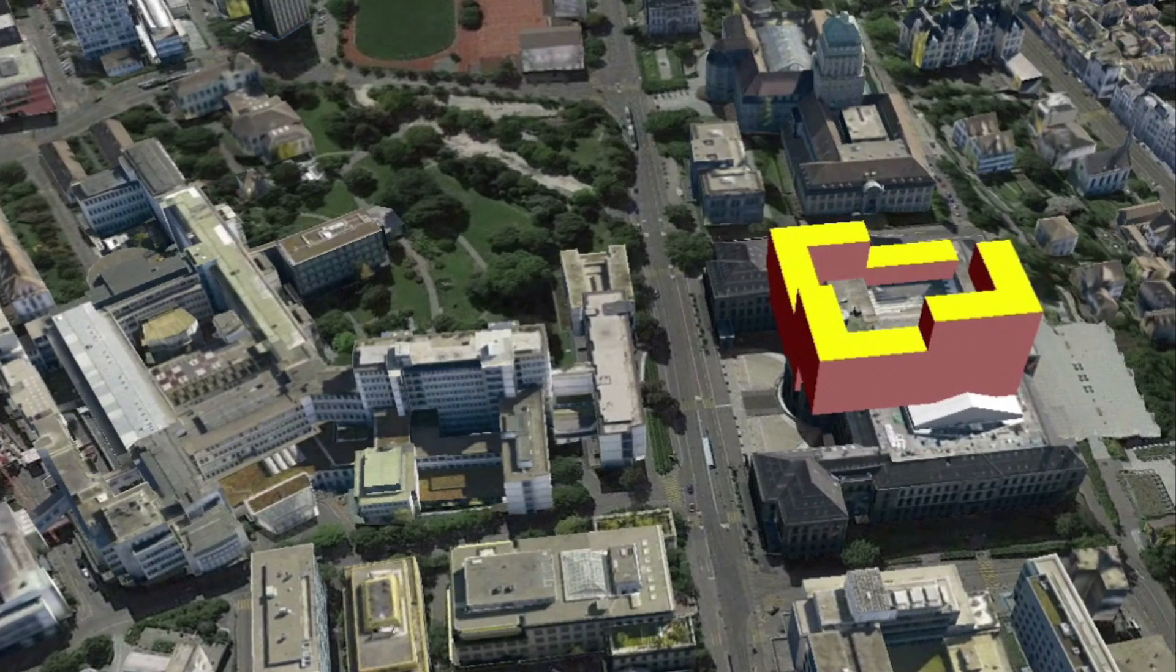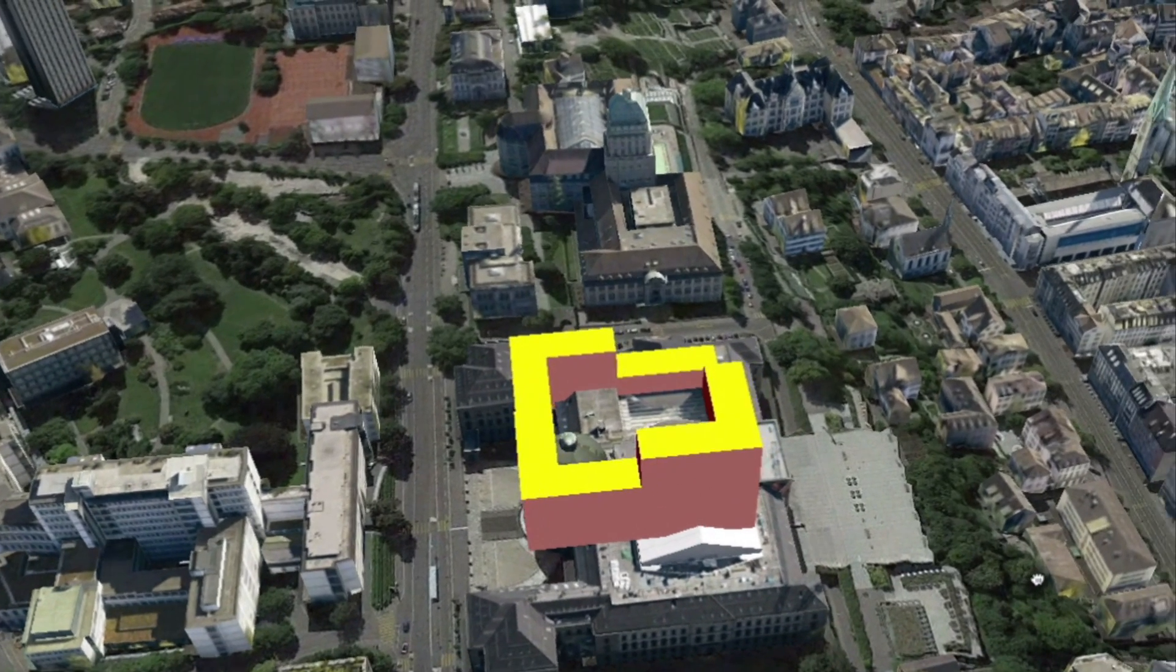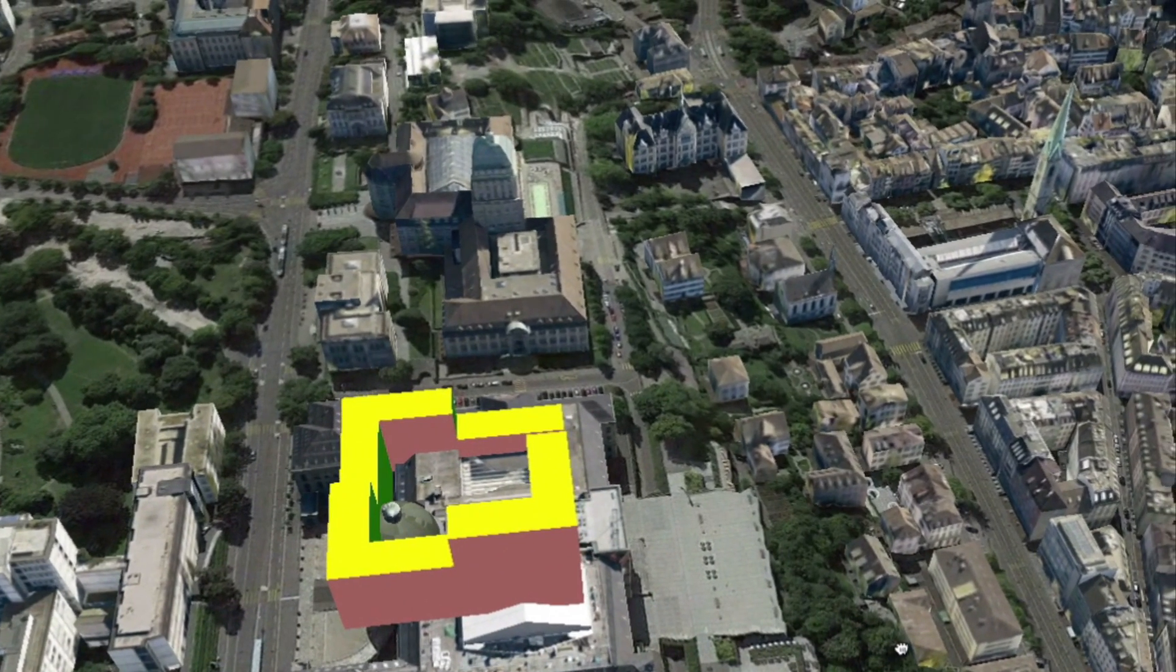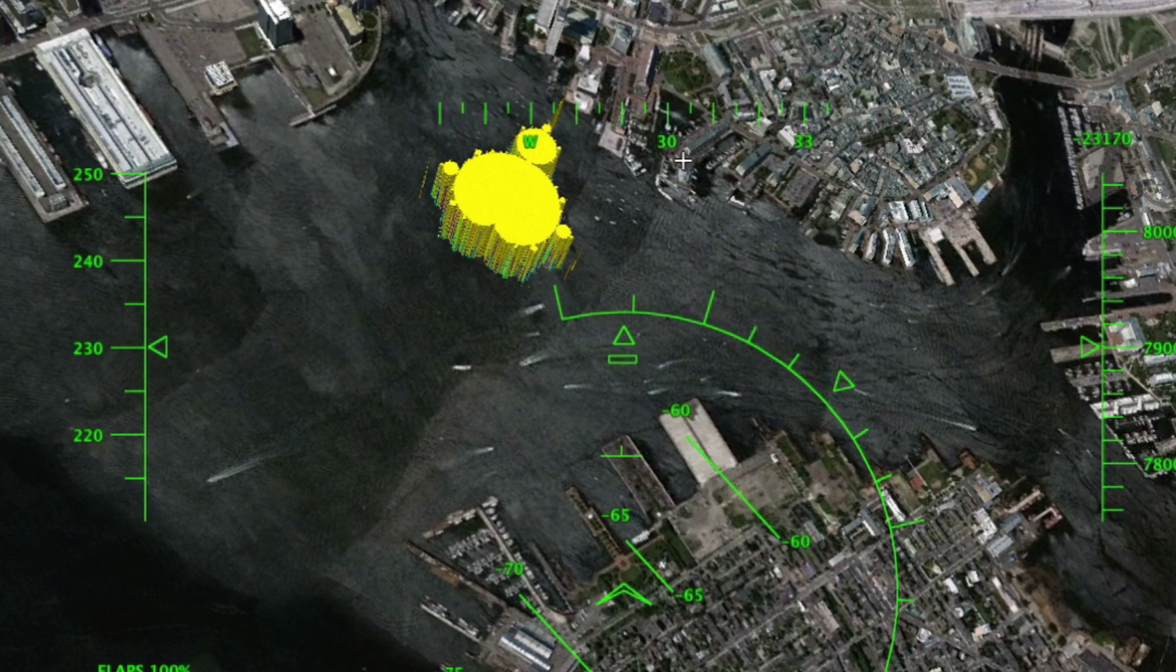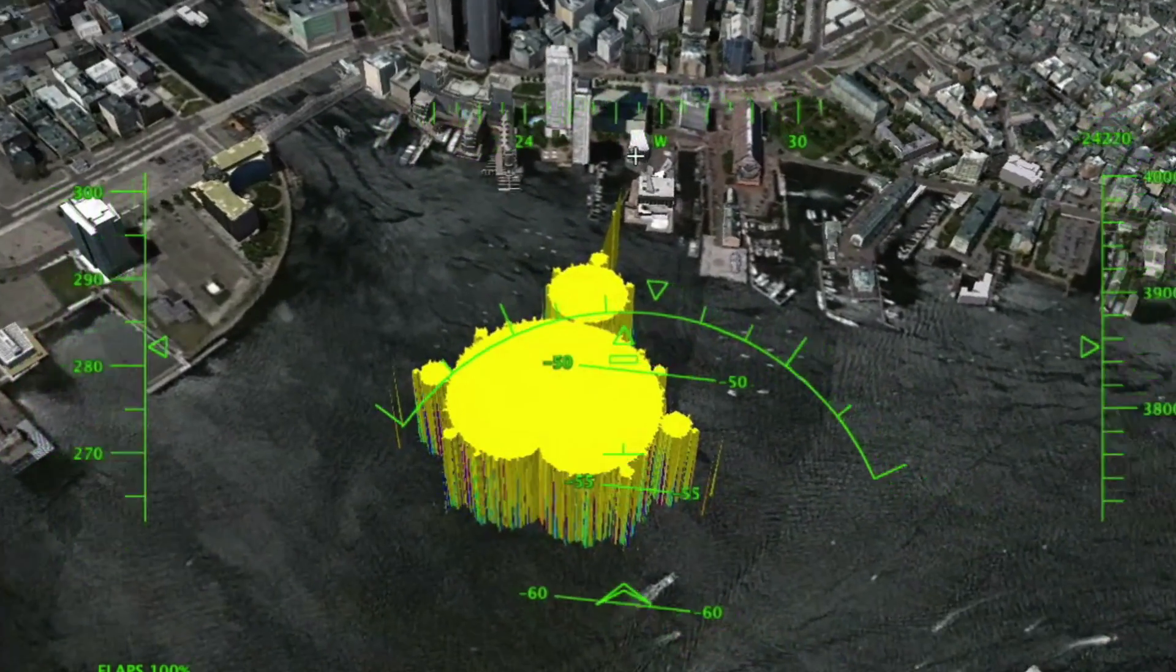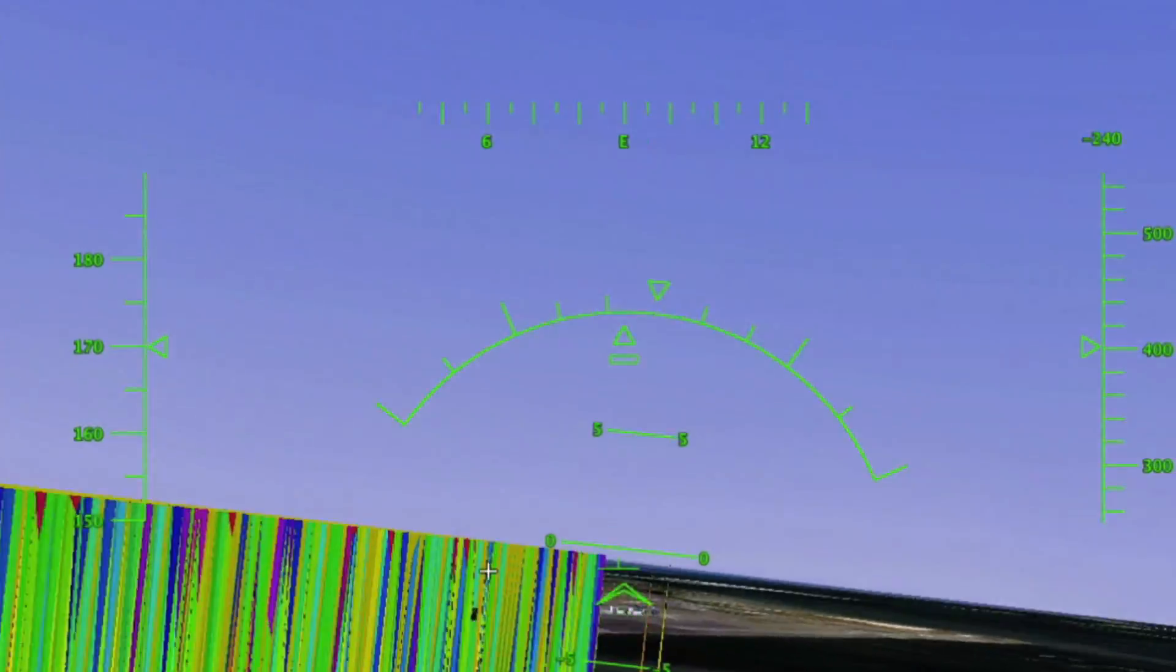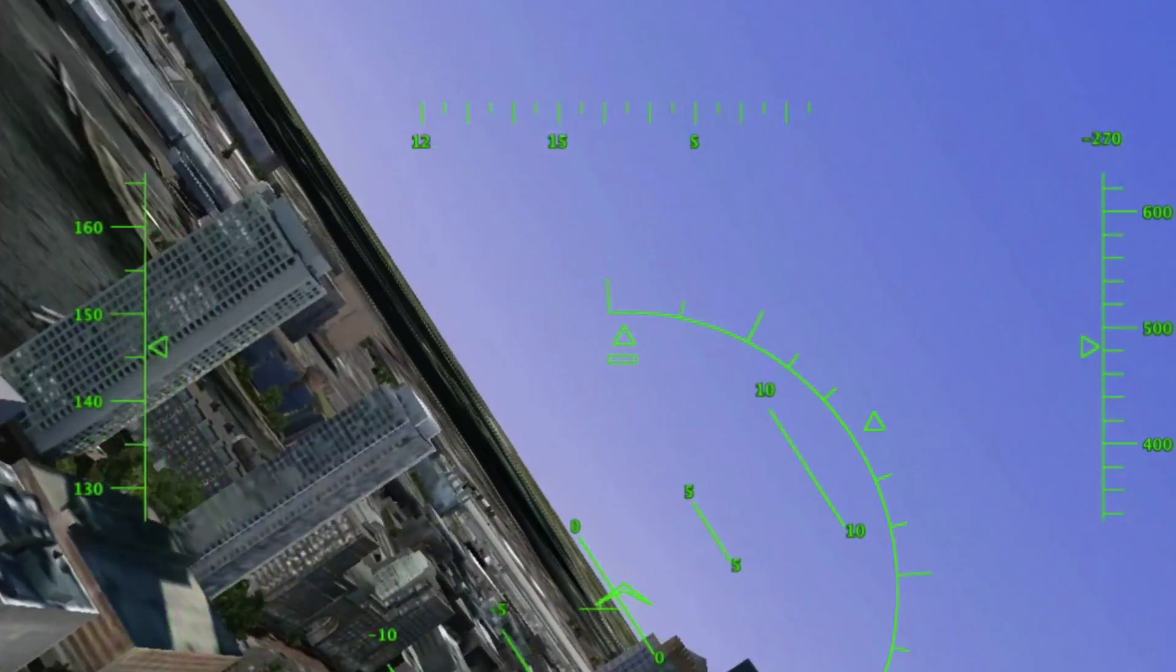So here is the Escher stair placed over my alma mater, the ETH Zurich. The task is to find a place where you see the impossible stair, and I think now we got that spot. Perfect. Or here is the Mandelbrot set placed in the Boston Harbor. So flying in Google Earth can still be sometimes a little bit choppy, but things are getting better and better and the hardware of course also gets better and very soon we can really play computer games in Google Earth.